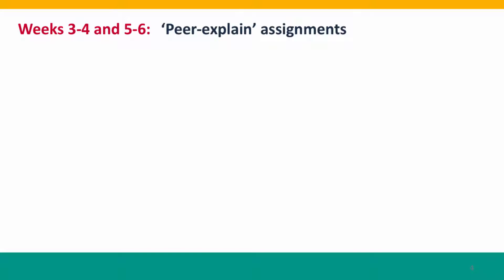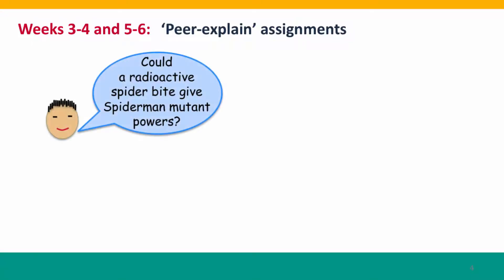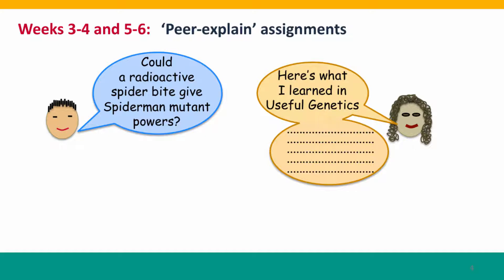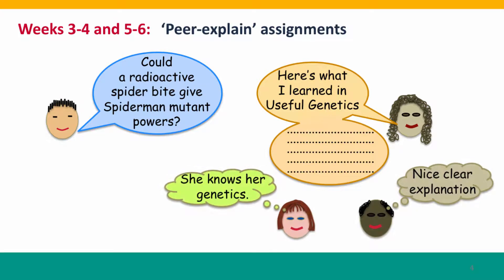Now I want to introduce a part of the course that you haven't encountered in Modules 1 and 2: our Peer Explain Assignments. We developed these assignments because we wanted to build students' ability to explain what they were learning to other people who didn't know as much genetics. Each assignment starts with a question about a genetics issue — the kind of question that might come up in a casual conversation. This example question would likely come up in the pub over a couple of beers. Students then write a short answer intended for a non-expert audience, and then other students evaluate their answers.